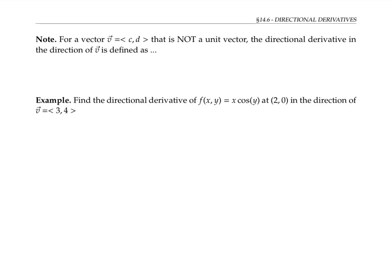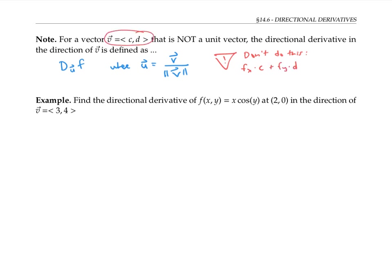So far we've talked about directional derivatives in the direction of unit vectors. If we have a vector v that's not a unit vector, then the directional derivative in the direction of v is defined as the directional derivative in the direction of u, where u is the unit vector in the direction of v. Note that we do not get the right answer if we just take f_x times c plus f_y times d, where c and d are the components of the original vector v — we have to rescale first before we write down that component expression.